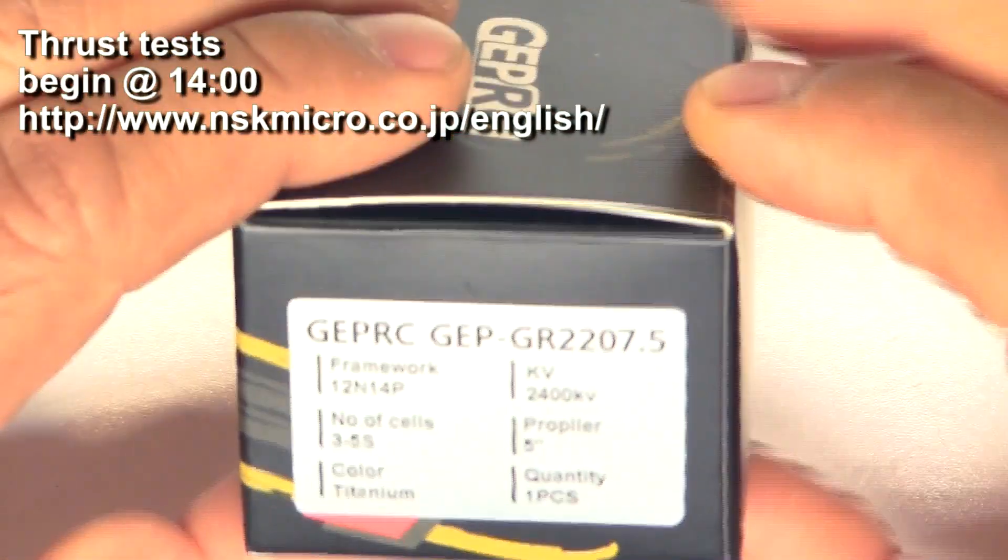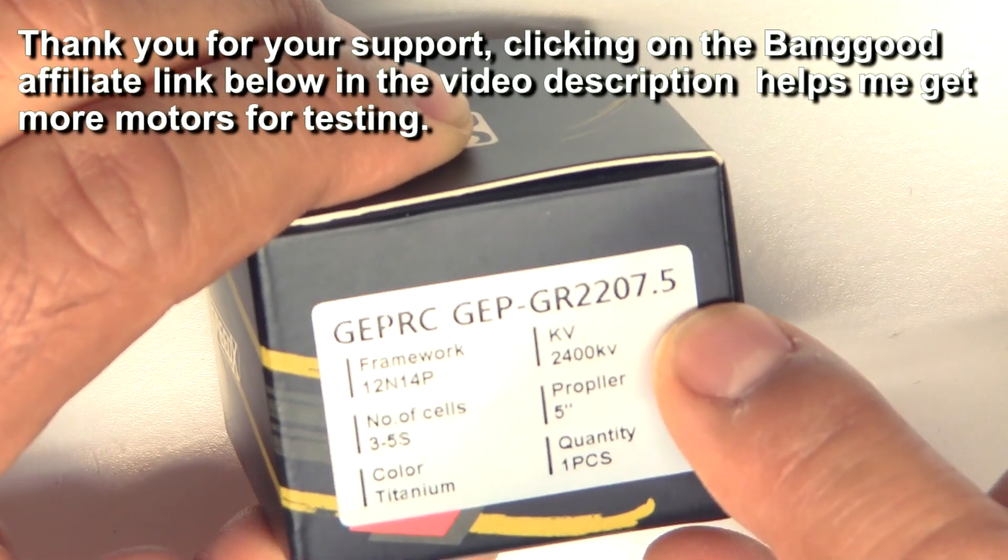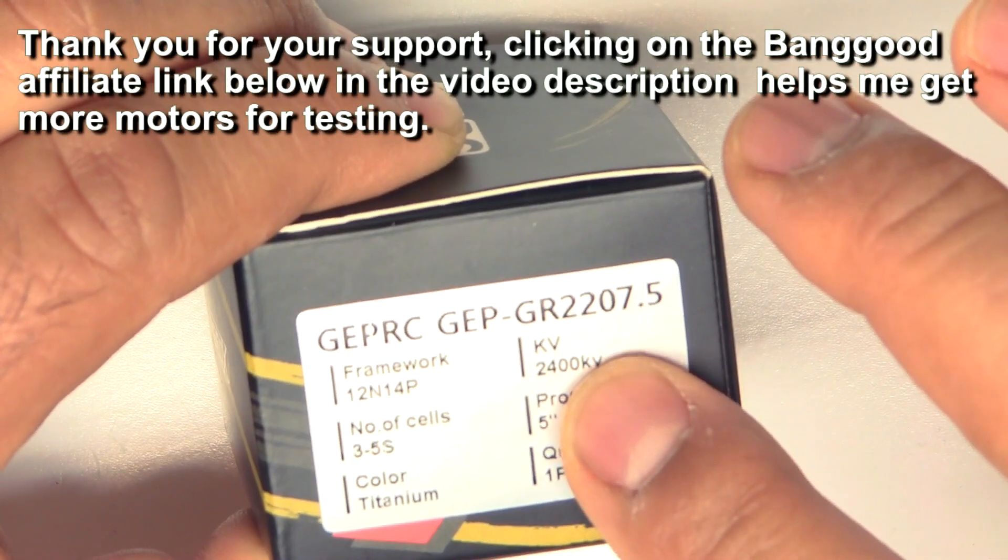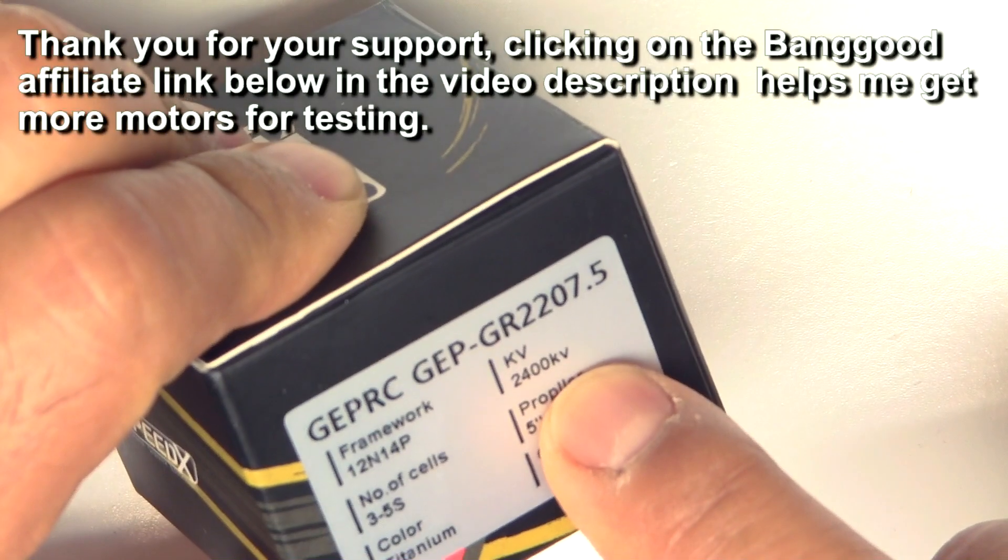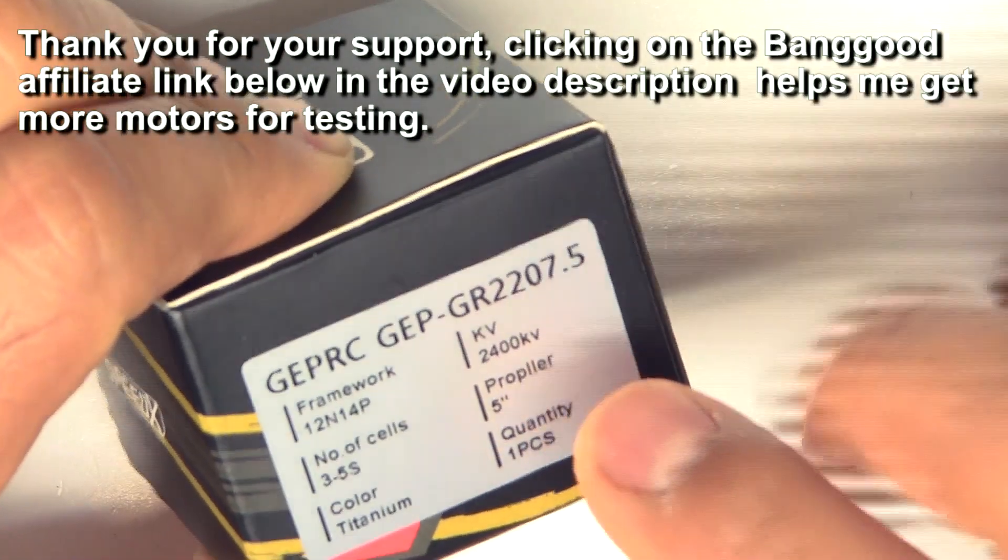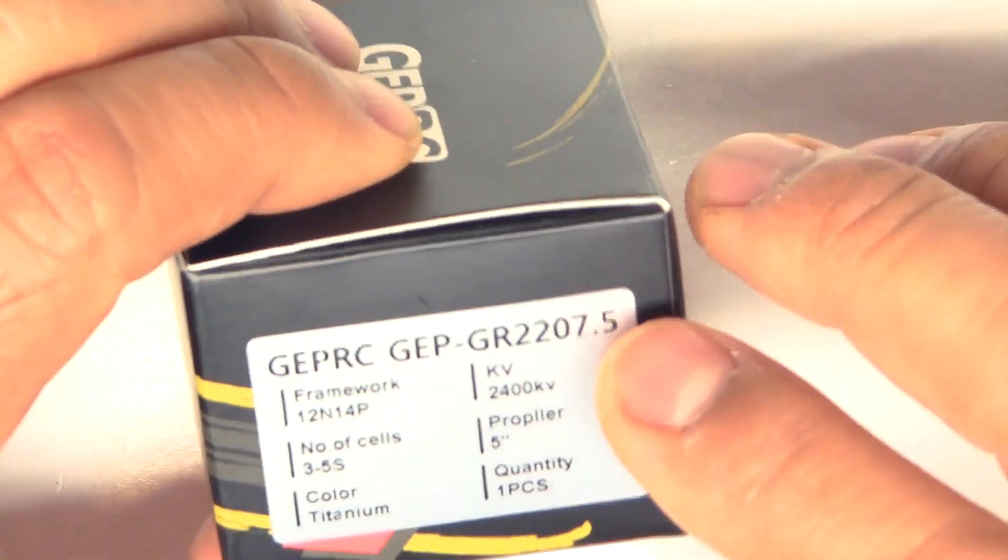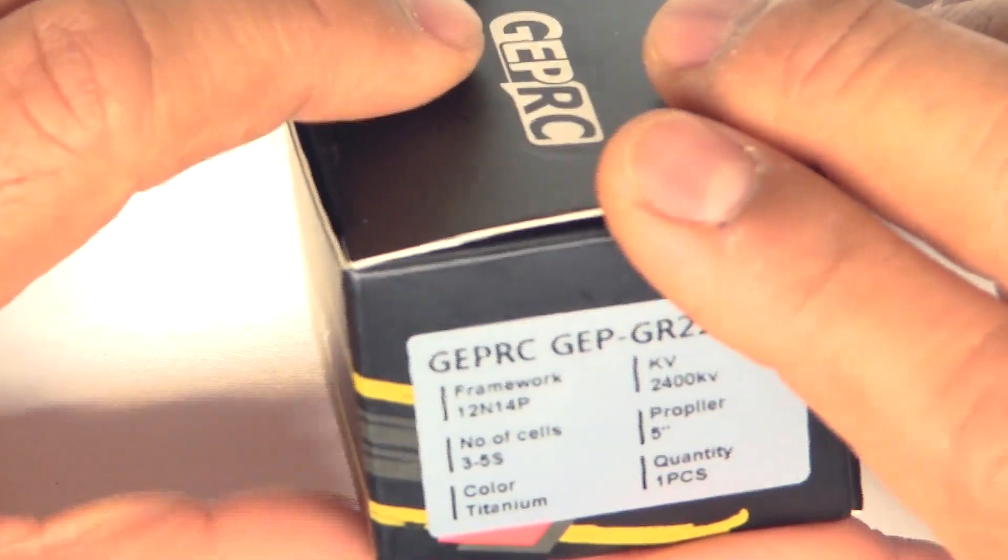This one is the GEP GR2207.5 and these motors come in four kV choices: 1700 kV, 1920, 2400, and 2750. So they pretty much covered the whole range of kV for different voltages, mainly for 5-inch props, 4S to 6S. This was sent by GEPRC Factory, so thank you very much for sending it.